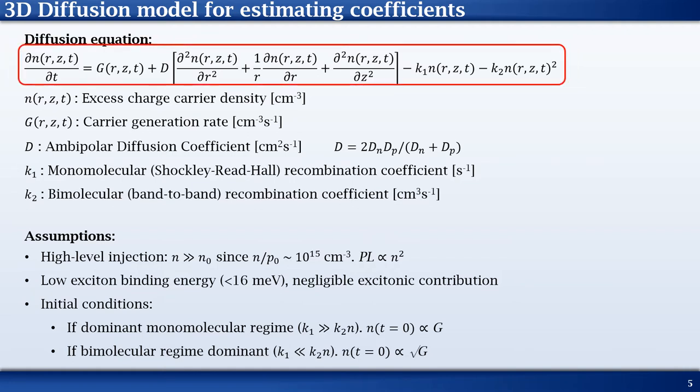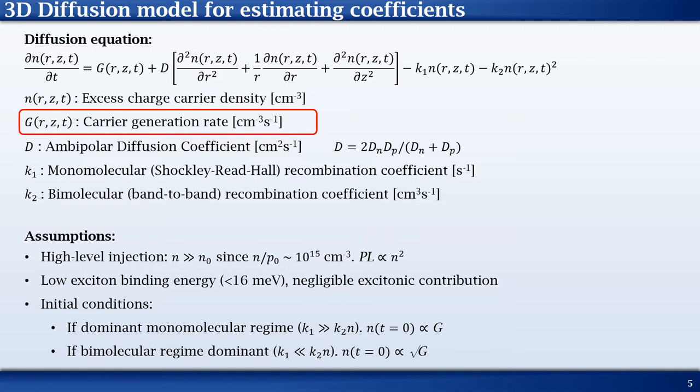This equation is expressed in cylindrical coordinates with R, theta, and Z as space variables. We assume isotropic diffusion and only use R and Z. The variable N represents the excess charge carrier density. The variable G represents the laser-generated charge carriers.